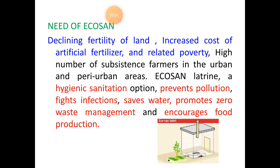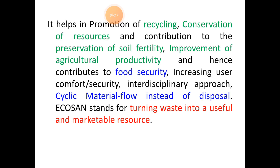Eco-san maintains hygiene, prevents pollution, fights against infections, saves water, promotes zero waste management, and encourages food production by usage of the manure or compost it produces. It also promotes recycling of nutrients, conservation of resources like water, preserves soil fertility by the usage of manure or compost in agricultural lands, increases the productivity of agricultural crops, and gives food security.